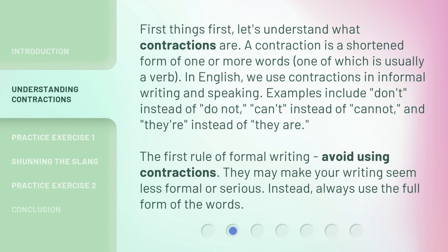First things first, let us understand what contractions are. A contraction is a shortened form of one or more words, one of which is usually a verb. In English, we use contractions in informal writing and speaking. Examples include 'don't' instead of 'do not', 'can't' instead of 'cannot', and 'they're' instead of 'they are'. The first rule of formal writing: avoid using contractions. They may make your writing seem less formal or serious.